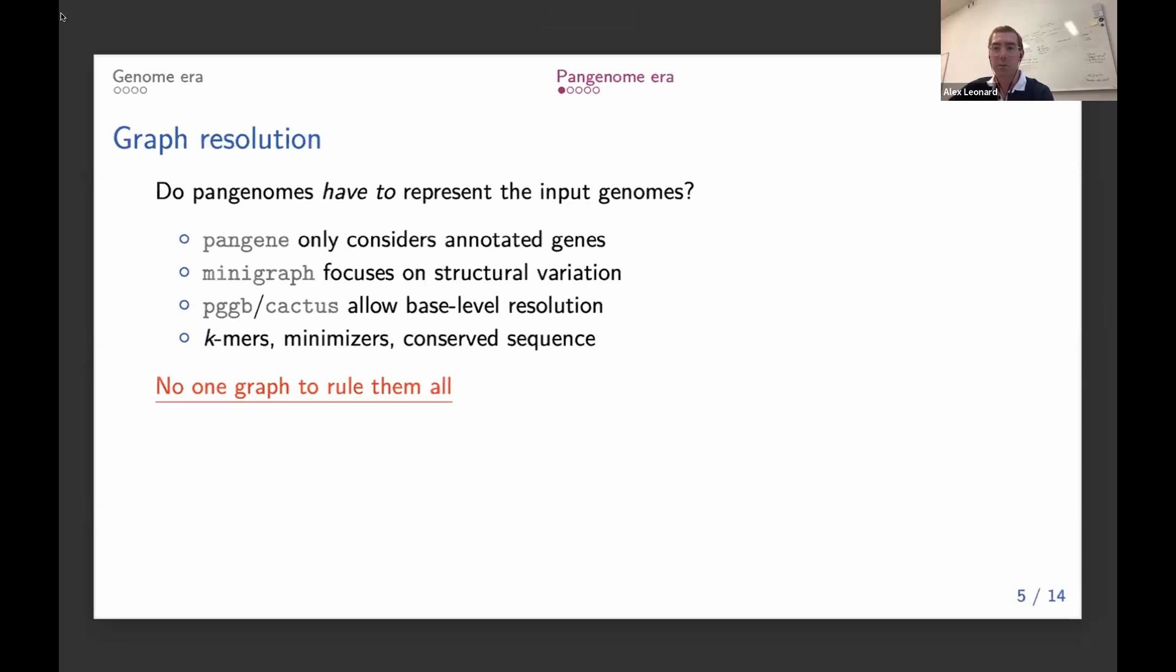Really, depending on the type of analysis you want to do, different levels of detail in the graph will be better for certain types of analyses than others. So it's highly unlikely that we'll really end up with just one pangenome for everything.